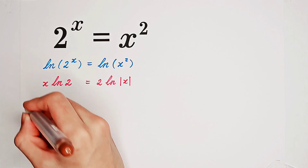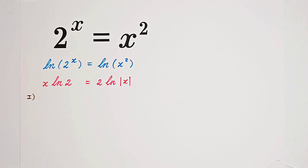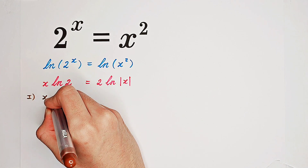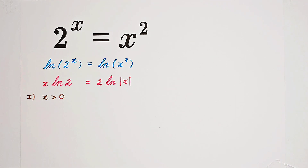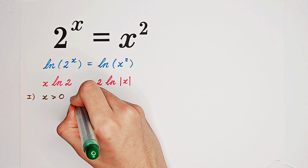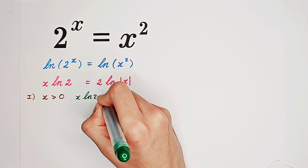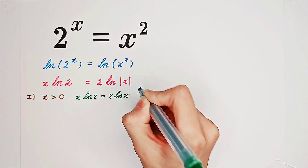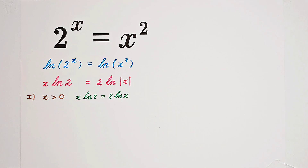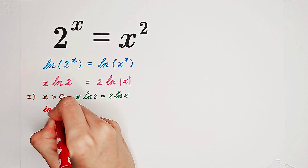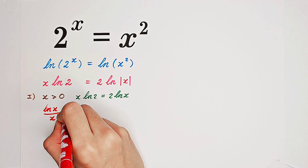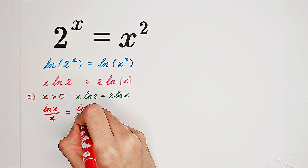Then what shall we do? Of course, we have two cases. In our first case, consider x is positive. If x is positive, then the absolute value of x is just x itself. So now we have x times the natural log of 2 equals 2 times the natural log of x. We should bring all the terms of x to one side and all the constants to the other. So we have the natural log of x over x equals the natural log of 2 over 2.